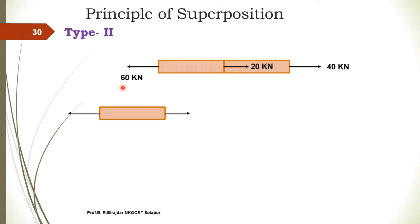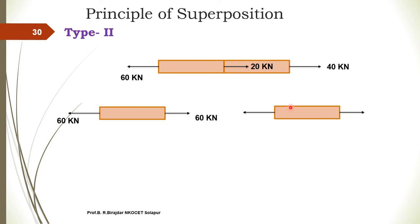On the first body, the 60 kN force is acting towards the left-hand side. To satisfy the condition of statics, an equal and opposite force must be added towards the right-hand side — so we apply 60 kN to the right. This gives us the free body diagram of the first body.